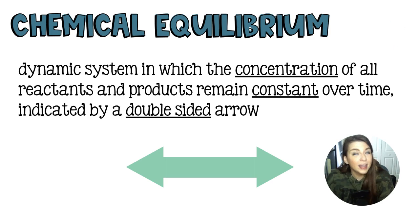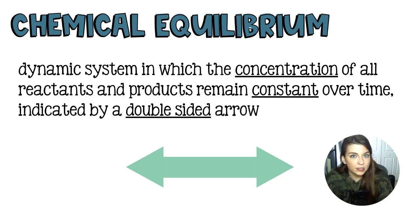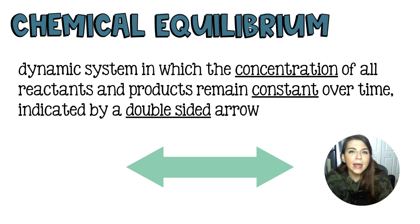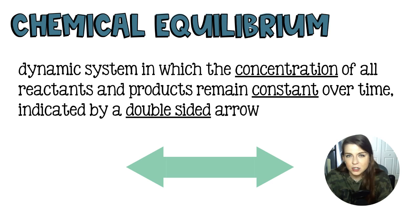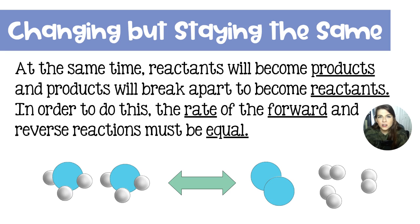The technical definition of chemical equilibrium is a dynamic system — meaning it's always changing — where the concentration, the amounts, of the reactants and products are going to remain constant over time. It's going to be indicated by a double-sided arrow. Sometimes it's a left arrow and a right arrow stacked on top of each other, or it could be the double-sided arrow — those are the same thing. So everything is changing, but also everything is staying the same.